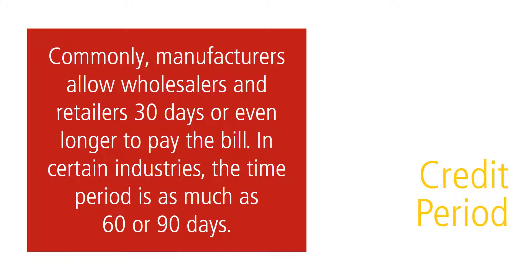Commonly, manufacturers allow wholesalers and retailers 30 days or even longer to pay the bill. In certain industries, the time period might be as much as 60 or 90 days. This is known as the credit period. It gives the buyer time to unpack, check the order, and — more importantly — begin selling the merchandise. The credit period clearly gives the wholesaler and retailer an advantage: they can generate revenue by selling the merchandise they haven't paid for yet.